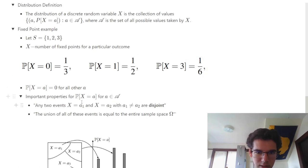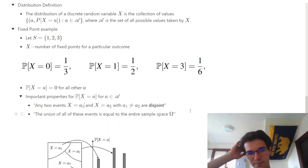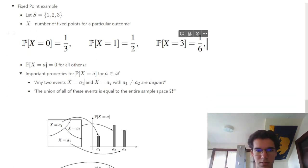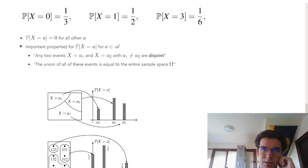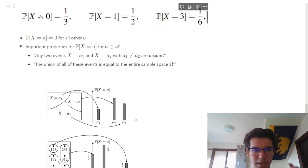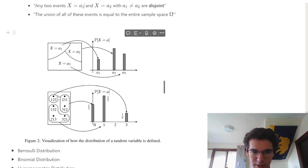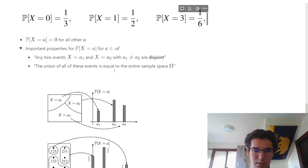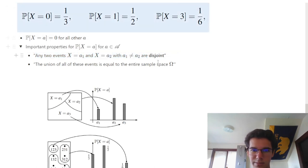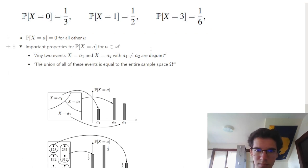Some important properties: any two events X=A1 and X=A2 are disjoint — if a sample point contributes to the space of sample points with 0 fixed points, it's not possible for it to also have 1 fixed point. And the union of all these events equals the entire sample space.